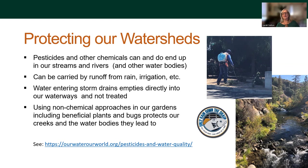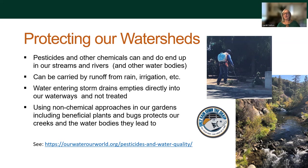Let's start by talking about protecting our watersheds. Use of chemicals has impaired water bodies all over the world. Rivers and streams in the Bay Area are listed as impacted from various chemicals used over the years. They find their way directly into our streams by rain and irrigation. When they get into storm drains — not everybody knows this — the water goes directly into water bodies with no treatment. Whatever's in there gets into streams and ultimately down to the bays and the ocean. Using a non-chemical approach in our gardens, including beneficial insects, bugs, and plants, protects our creeks and the water bodies they lead to. For more information, visit ourwaterourworld.org.